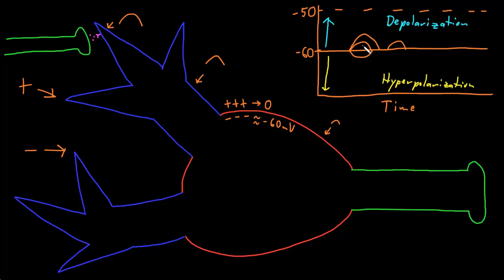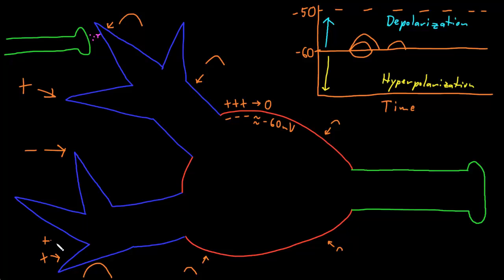Similar to temporal summation is the concept of spatial summation. If two graded potentials happen far enough away from each other, they may have no effect on each other. But if you had two kinds of excitatory input very close to each other on the membrane, those two depolarizations could have spatial summation — they could add together in space so you could get a depolarization twice the size. The same would be true for hyperpolarizations: you can have temporal and spatial summation of hyperpolarizations to get hyperpolarizations that are larger in size.